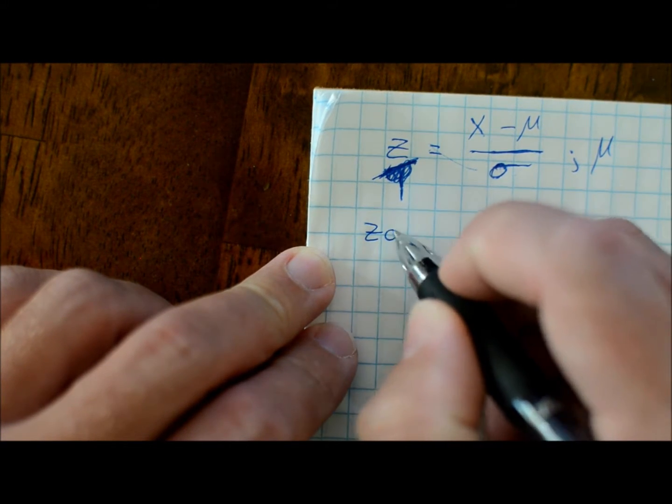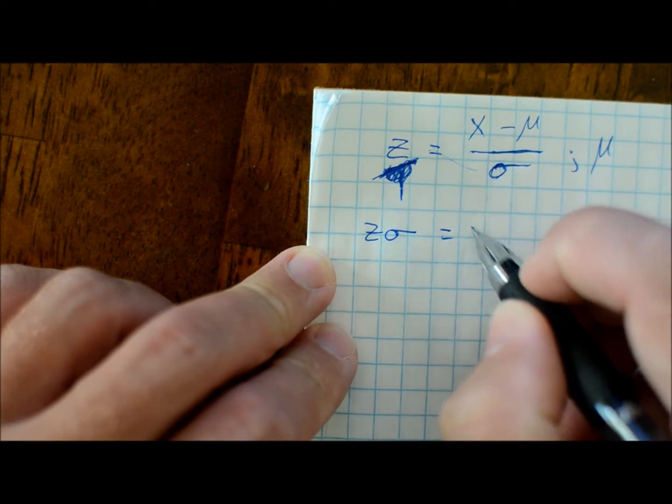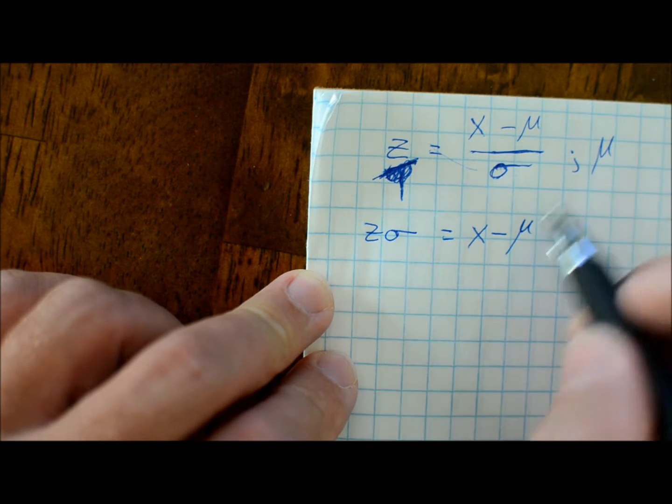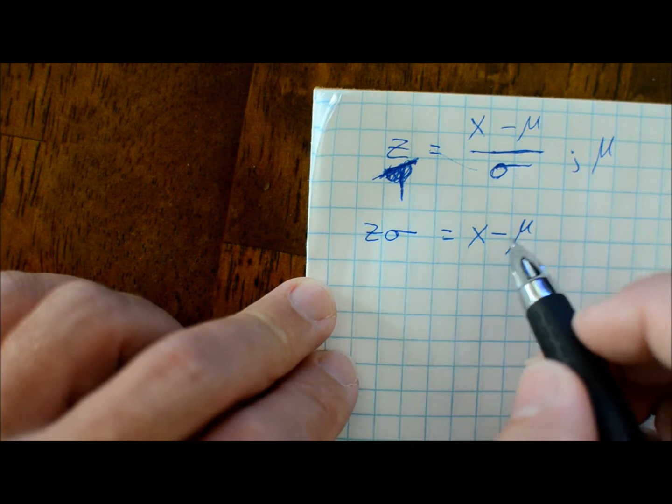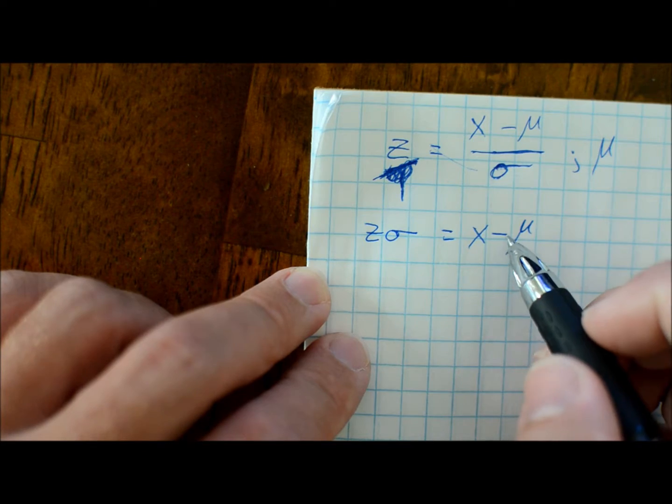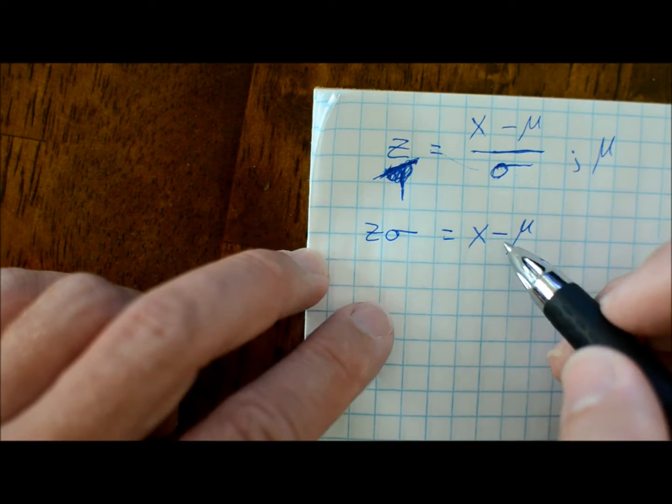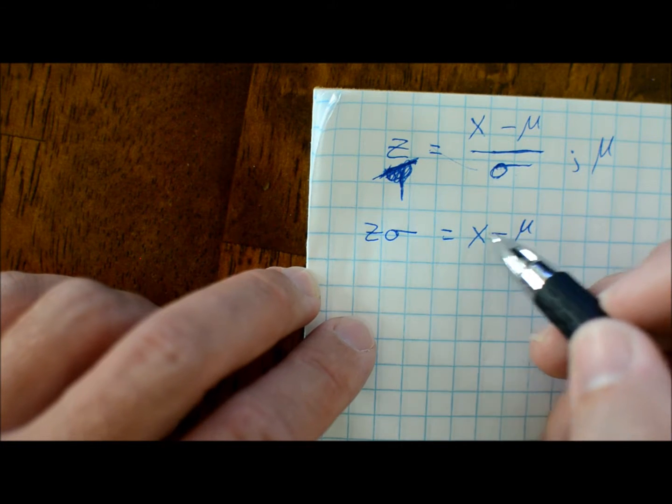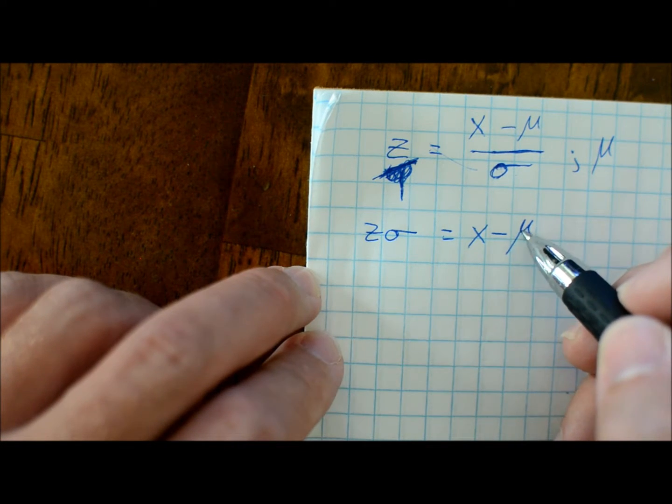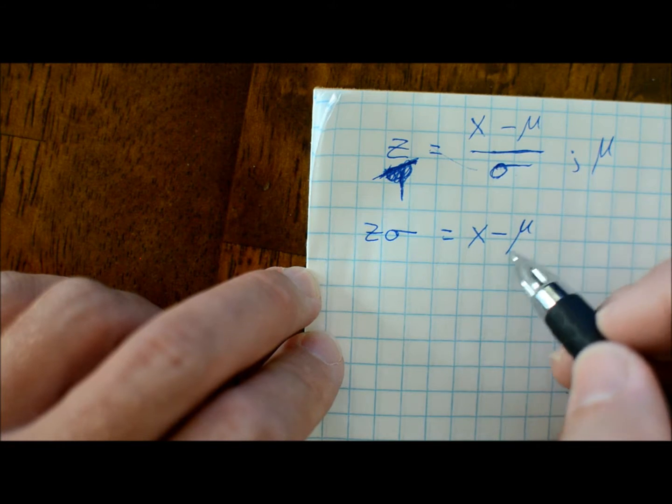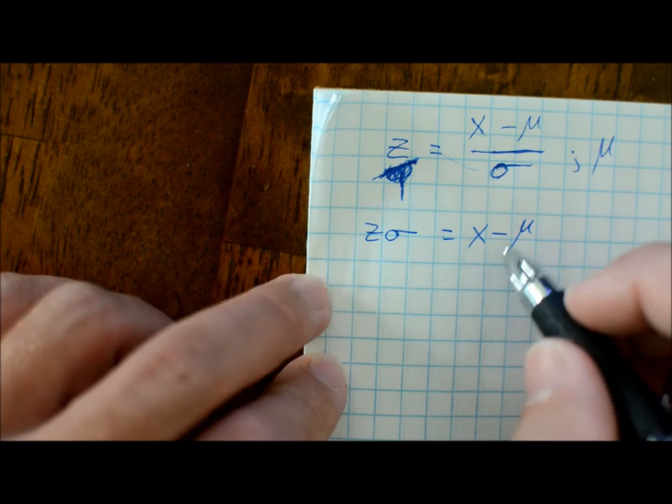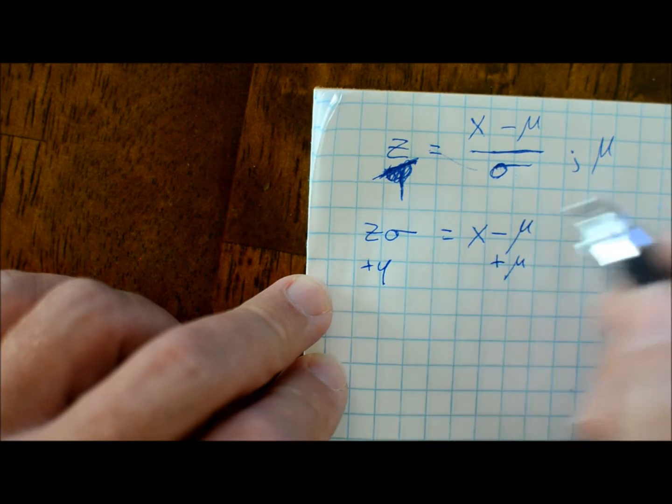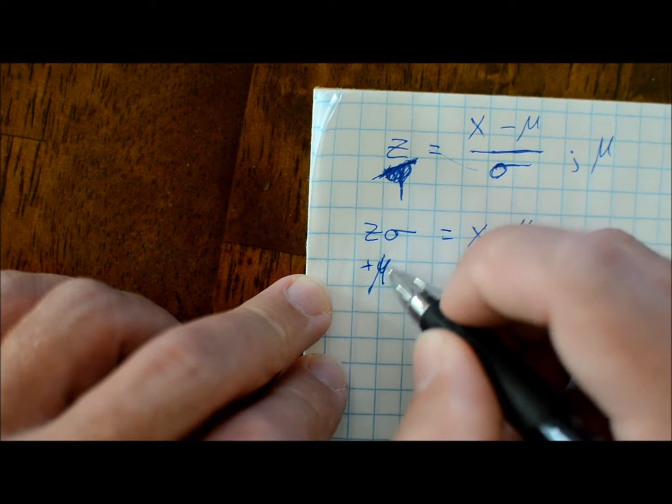So you get zσ equals x minus μ, and we're solving for μ. We can do this one of two ways: we can move the x over and multiply the whole thing by negative one on both sides to change the sign, or we can just move this μ over by adding. Let's do that - then we just have one extra step.